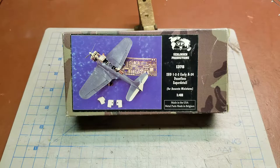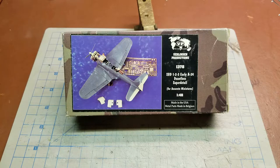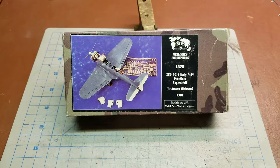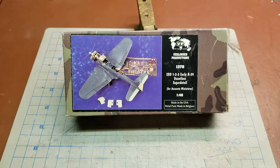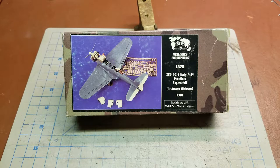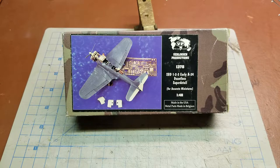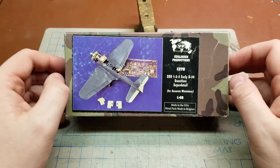Hello YouTube, today on Details and Dioramas I have Verlinden Productions kit number 1378. This is the SBD1-2-3 early A24 Dauntless Super Detail set for the Accurate Miniatures kit.